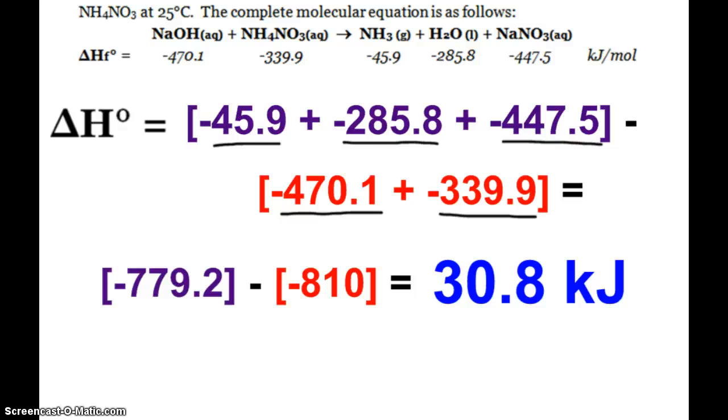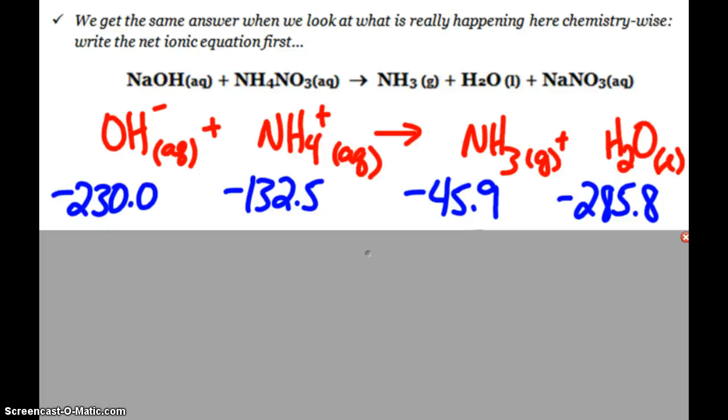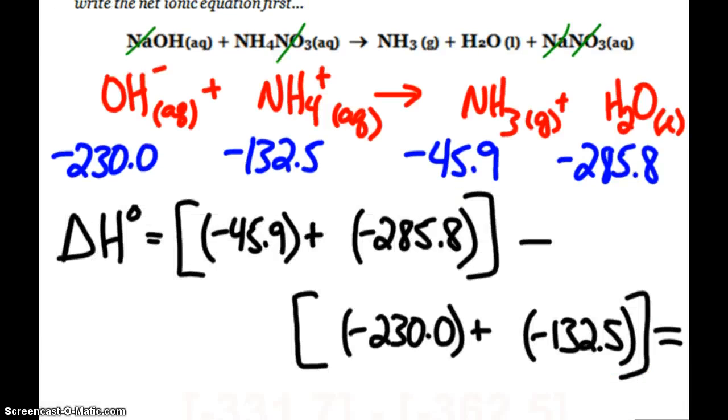Now what's interesting, those are some big numbers, which isn't horrible as long as you have those available to you. But also, we would get the same answer if we look at what's really happening chemistry-wise, a.k.a. net ionic equation. Because technically, sodium is a spectator ion, nitrate is a spectator ion, and my reaction is basically hydroxide and ammonium reacting to make ammonia and water.